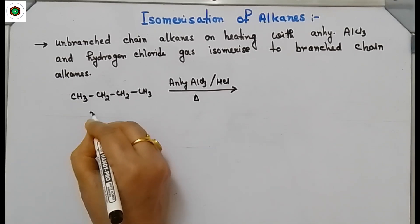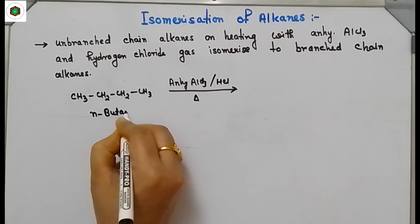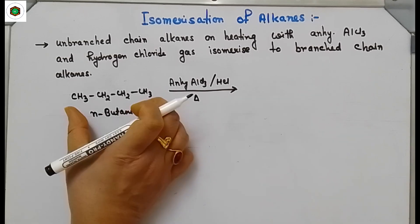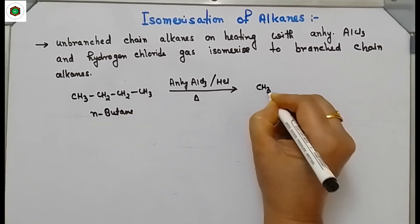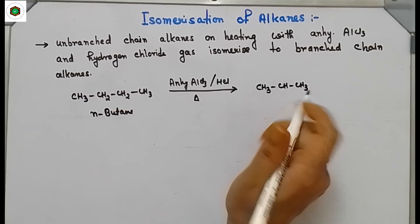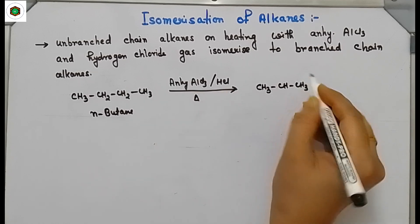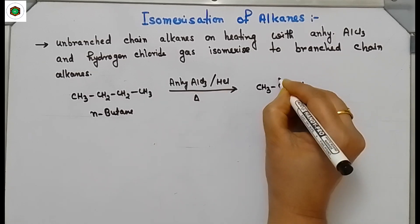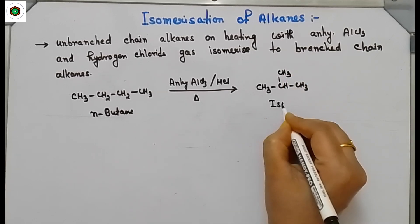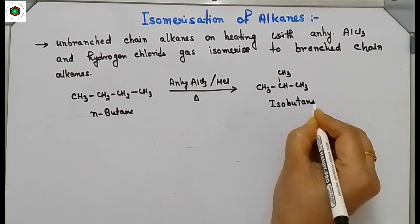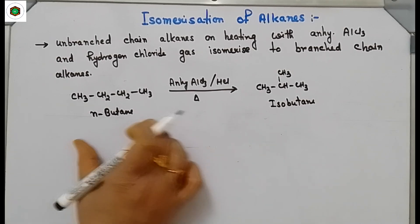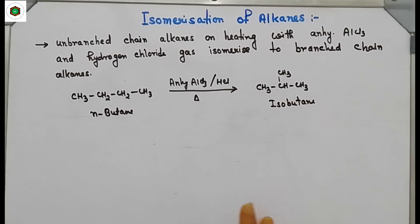This is N-butane. First you have to cut short the main chain — this chain has four carbon atoms. Write three carbon atoms in the main chain. To make its isomer, the remaining carbon is added as an alkyl group, a methyl group. This gives isobutane, which is a branched alkane. These two have the same molecular formula but different structures.